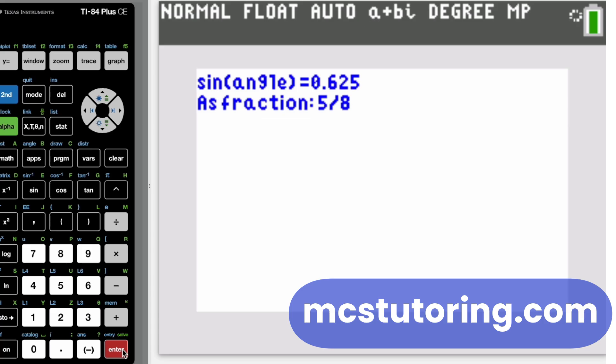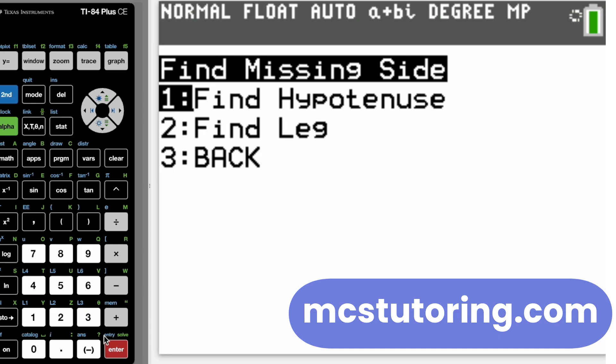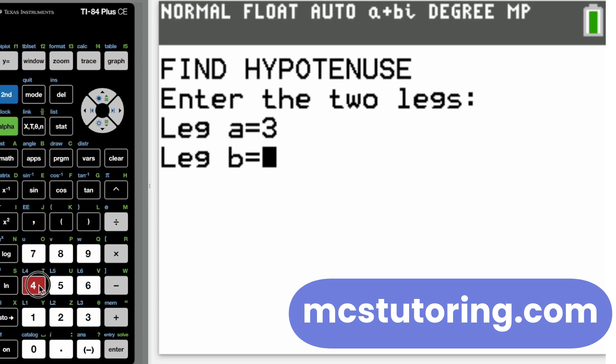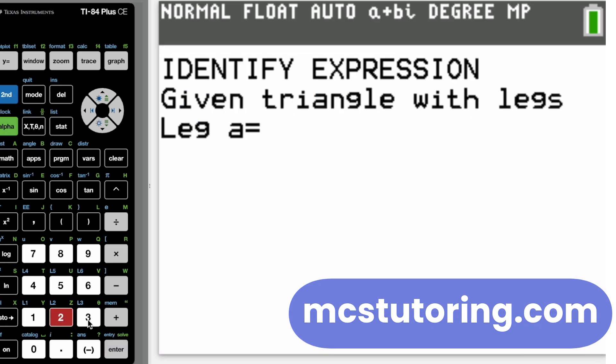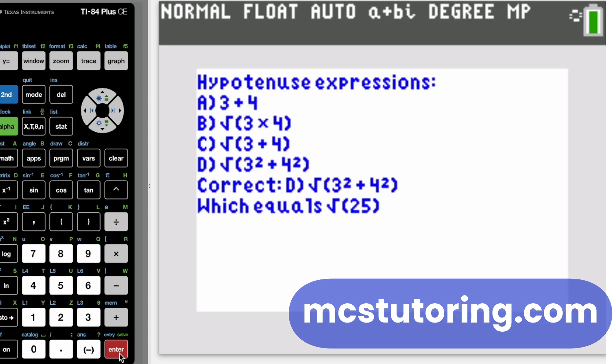Need to find a missing side in a right triangle? Just input your known values and the program instantly calculates the answer, showing you the exact formula used, like the Pythagorean Theorem. Even identify correct mathematical expressions to solidify your understanding.